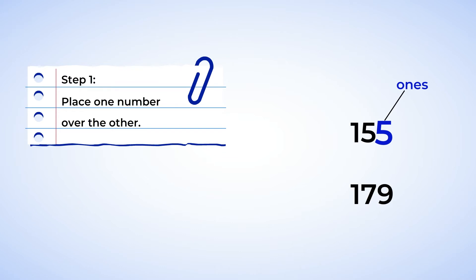The ones place of the number on top, 5, is directly over the ones place of the number beneath it, 9. Once you've aligned the ones places, you've done the hardest part. Just make sure all the other number places are aligned as well.